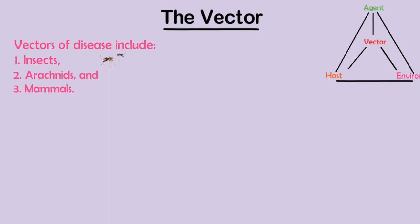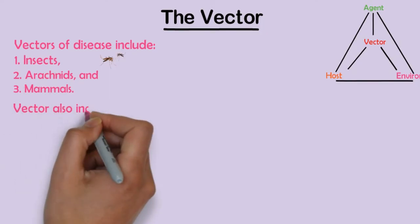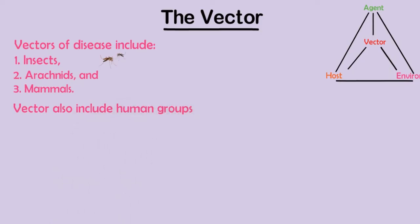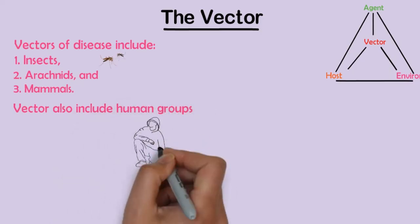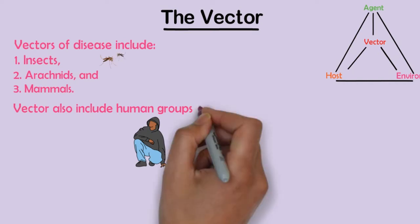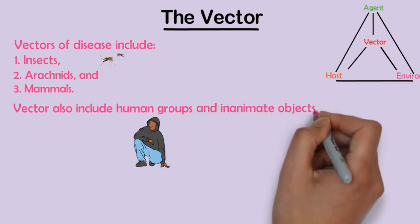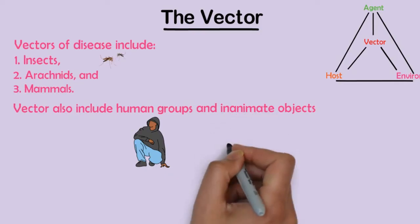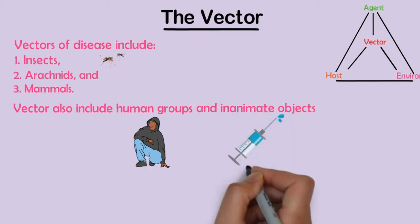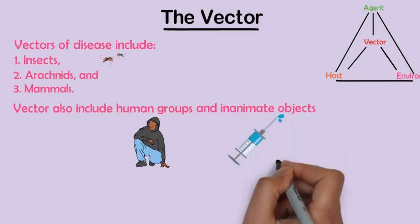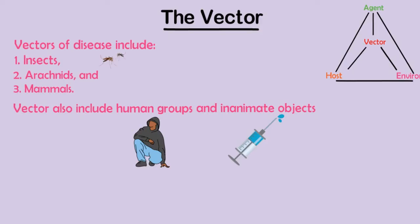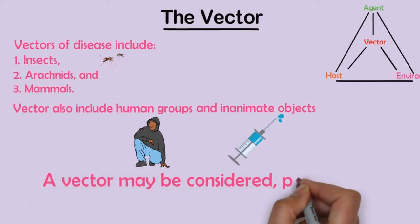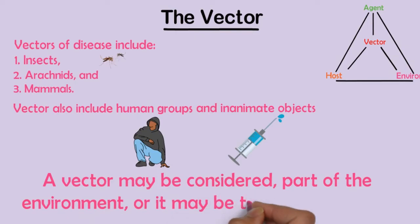The concept of the vector can be applied more widely, however, to include human groups — for example, vendors of heroin, cocaine, and methamphetamine — and even inanimate objects that serve as vehicles to transmit disease, such as contaminated needles associated with hepatitis and AIDS. A vector may be considered part of the environment or it may be treated separately.